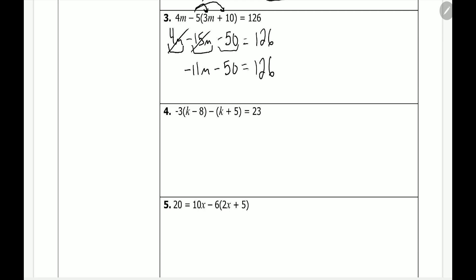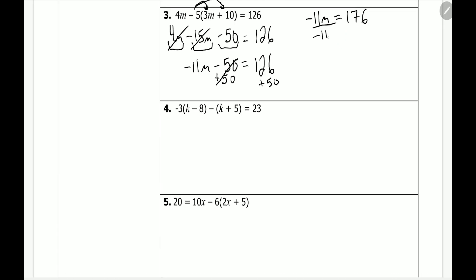Now we solve this equation. We get rid of the negative 50 first by adding 50 to both sides. We have negative 11m equal to 126 plus 50, which is 176. Then we divide both sides by negative 11 to solve for m. The negative 11s cancel, leaving m equal to 176 divided by negative 11, which gives us negative 16. And that's our answer.